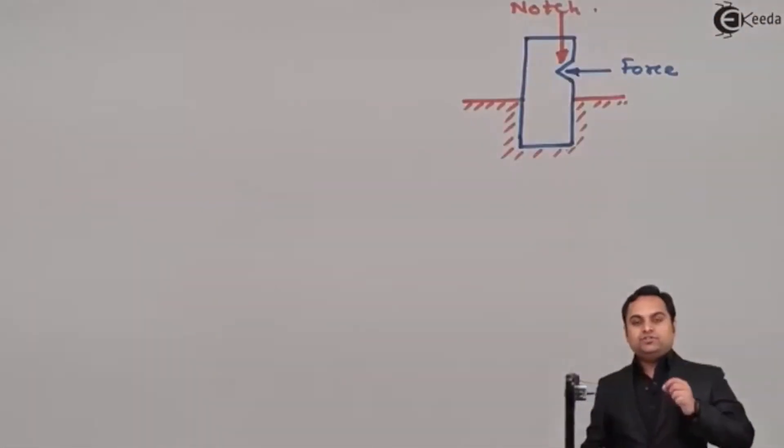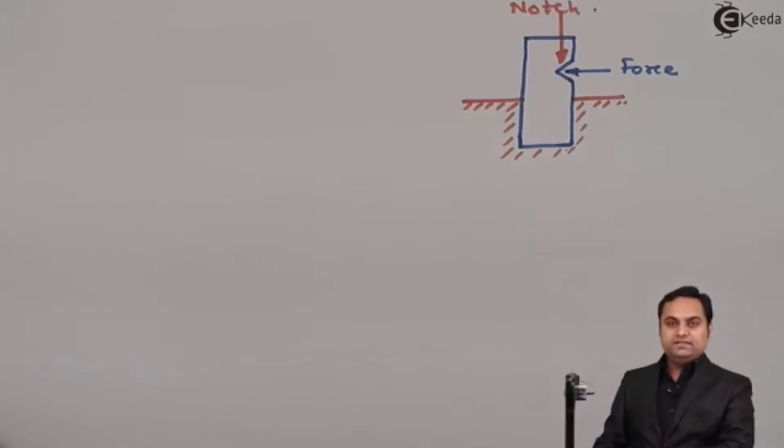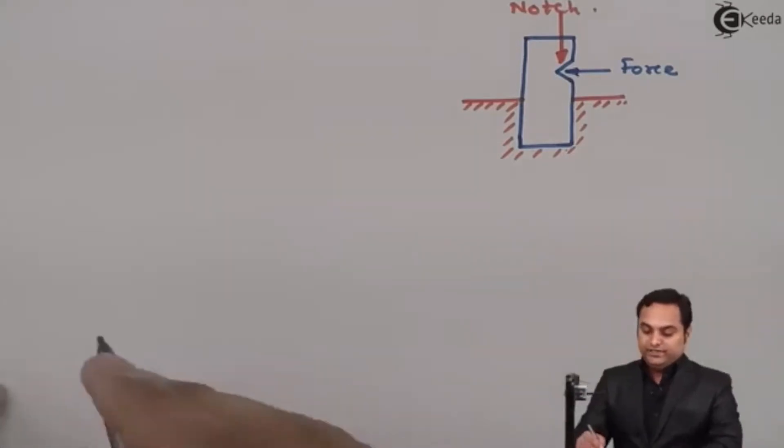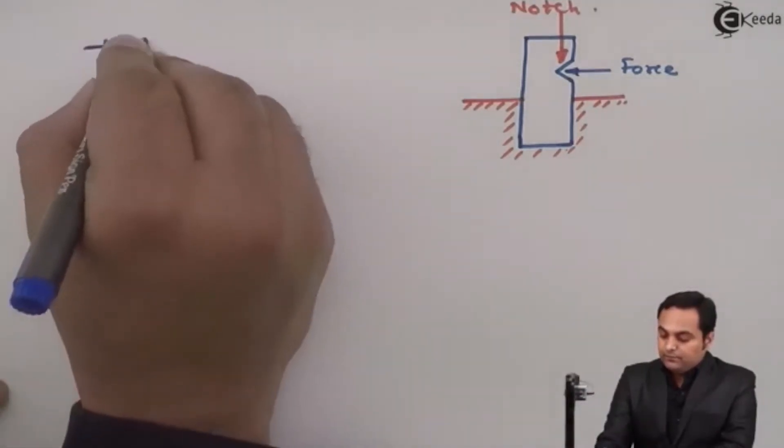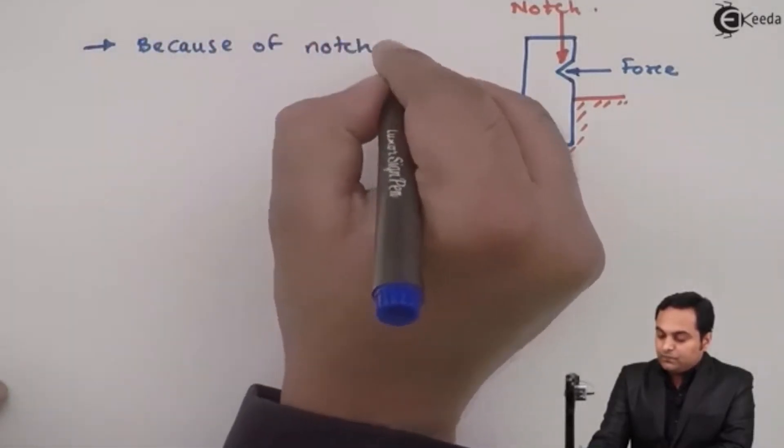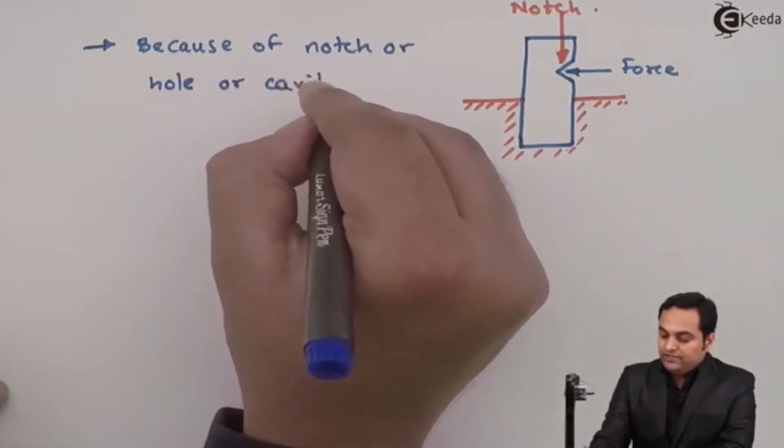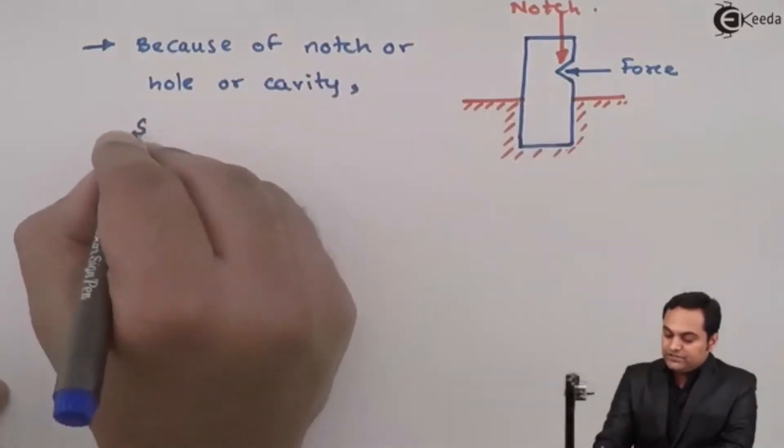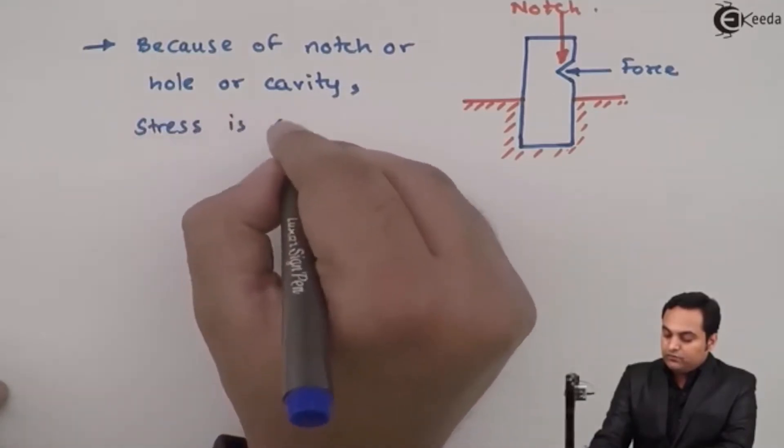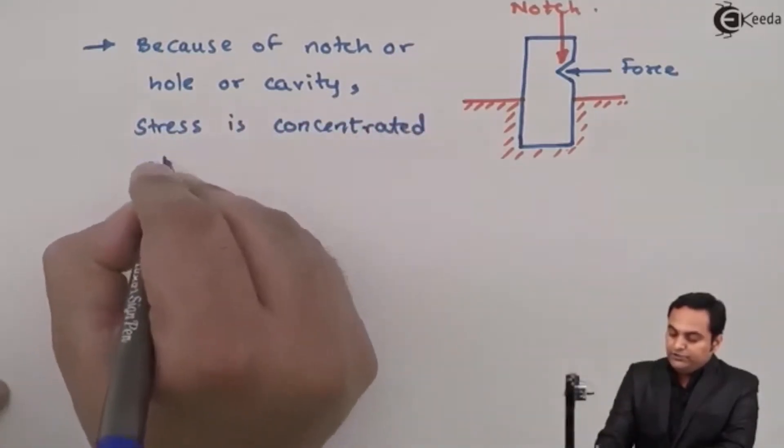Because of the notch which is formed in the metal or material, the amount of force required would be less and we can easily break the material. Because of a notch, hole, or cavity, stress is concentrated at a point.